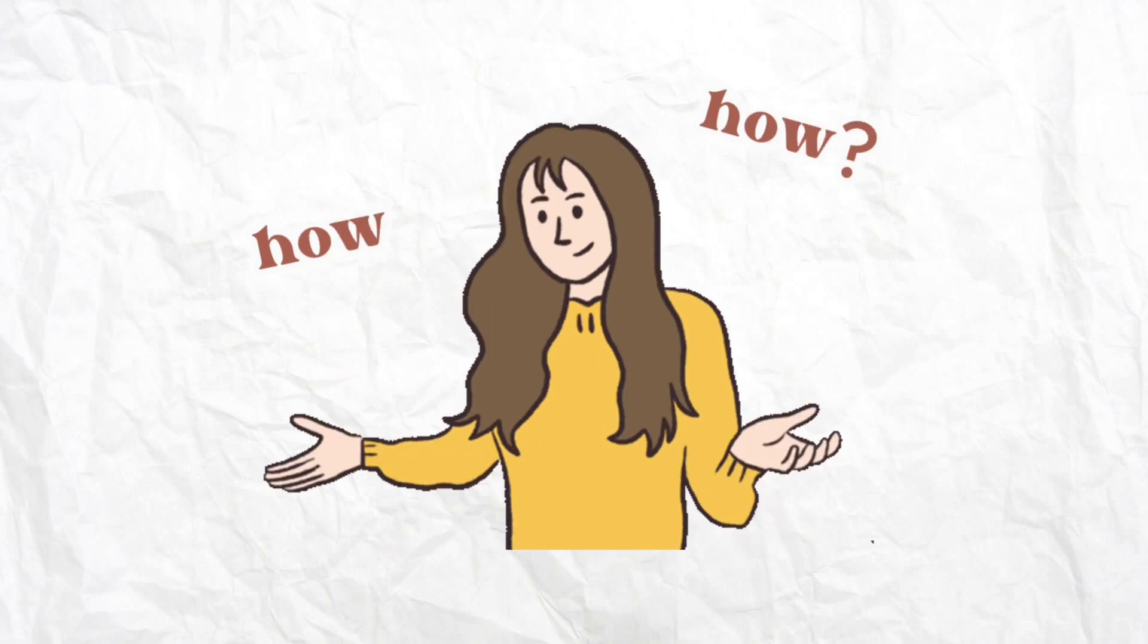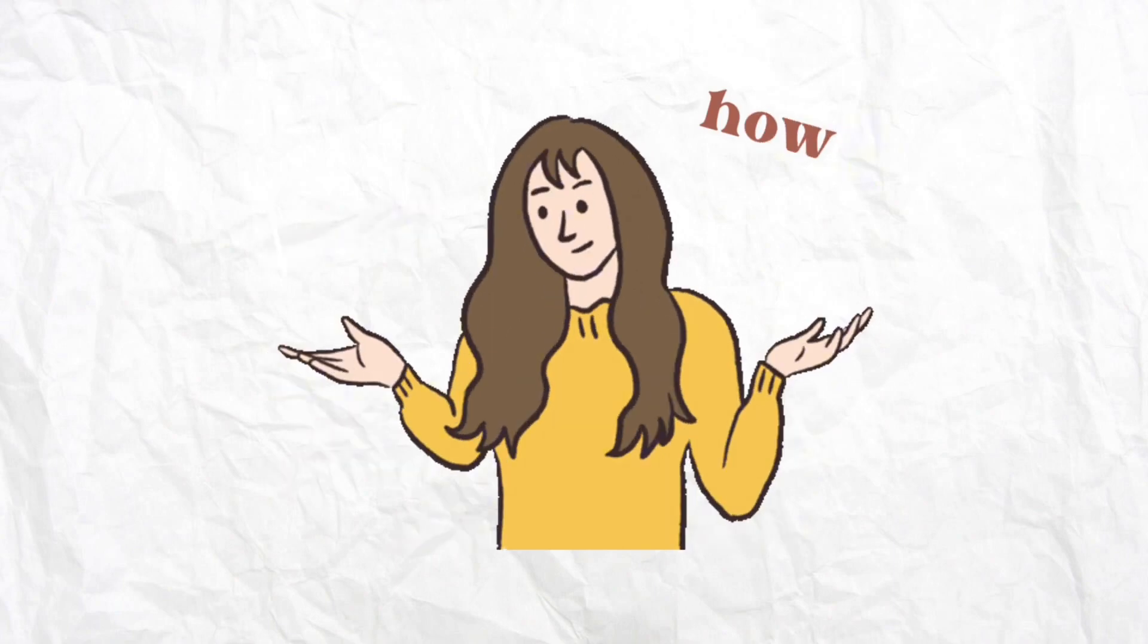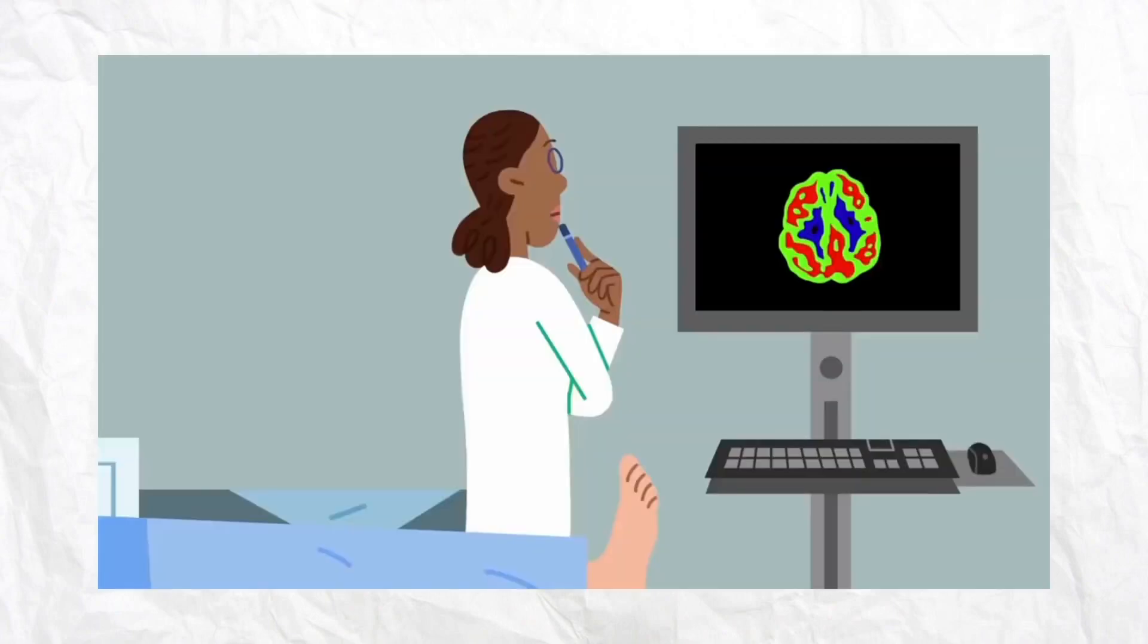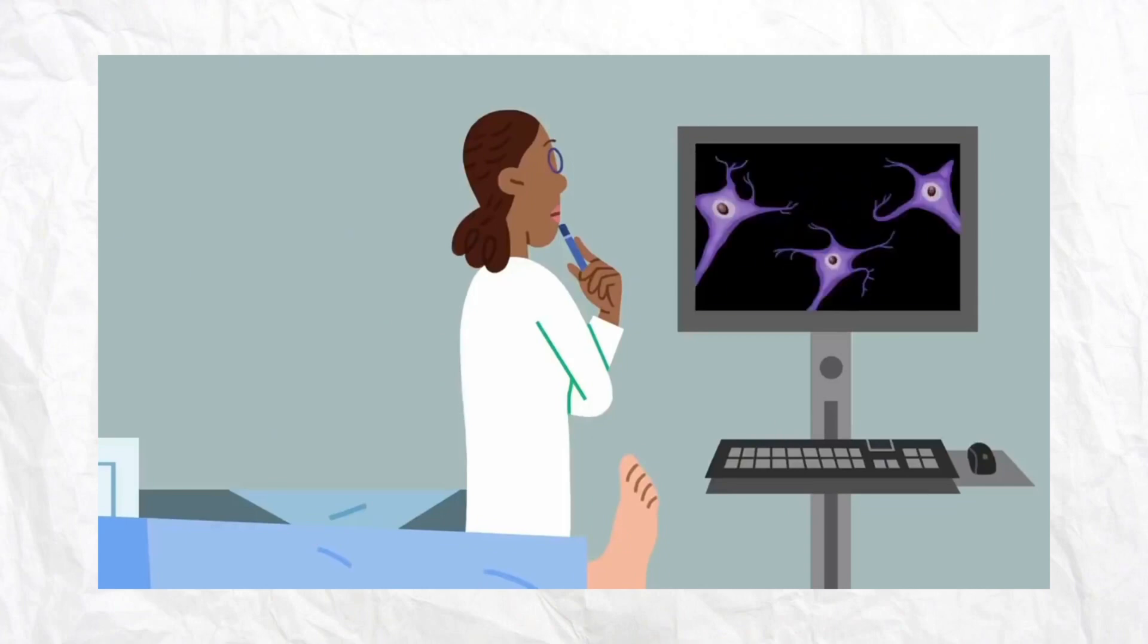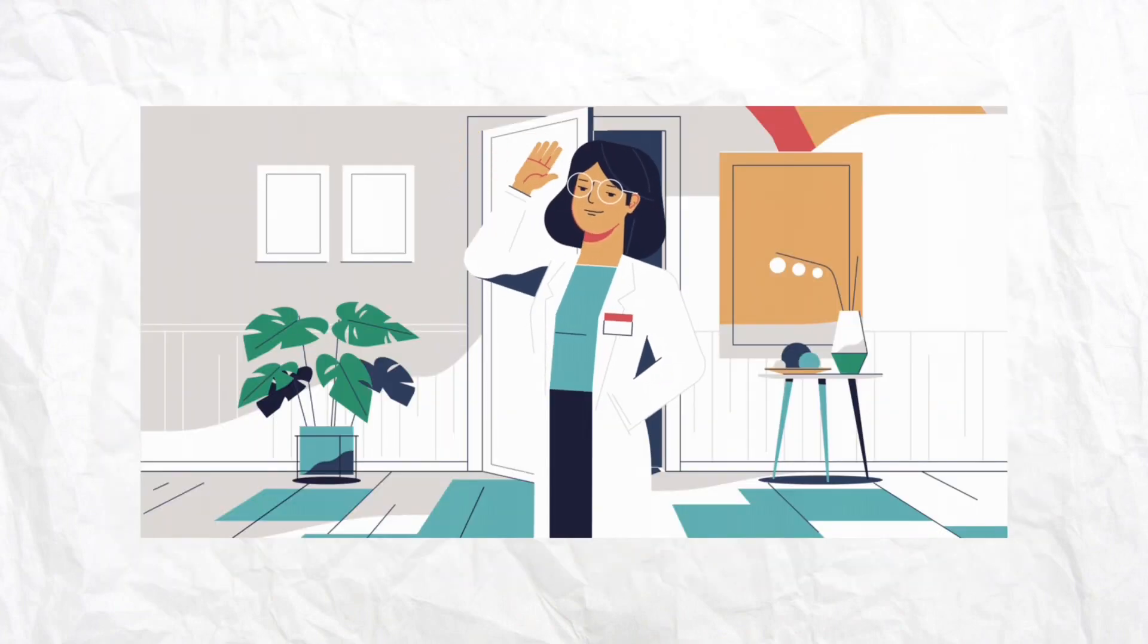Now, how is PET able to visualize our brains? It is because of the radioactive molecules distributed in our brain. Now, let's start to dig into the details.